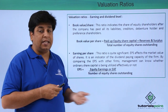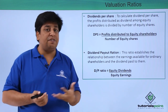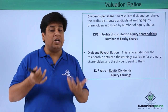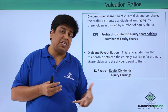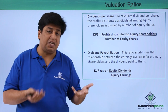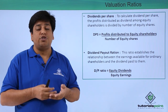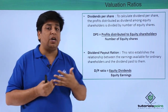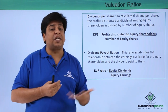Next is dividend per share. Earnings and dividend are different — from earnings after tax we deduct reserves, surplus, or retained earnings, and what we finally give to shareholders is the dividend. If an investor is looking for short-term or quick returns, they would prefer a company that gives a good dividend per share.